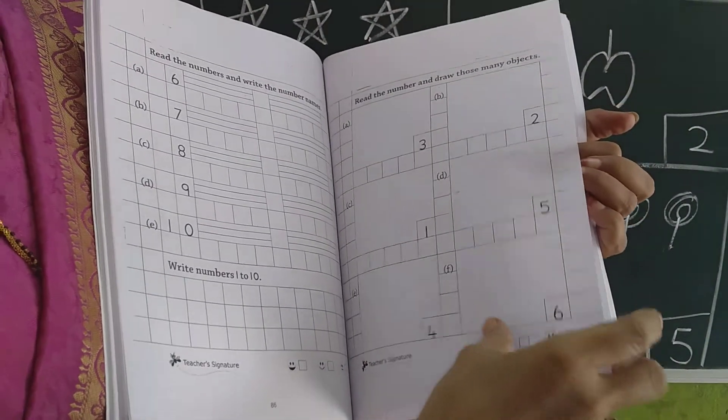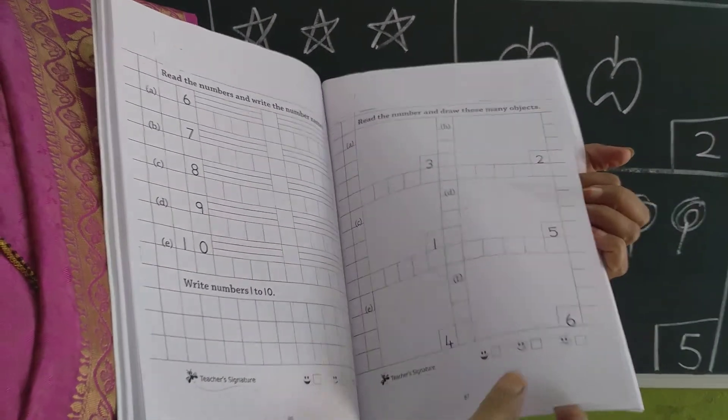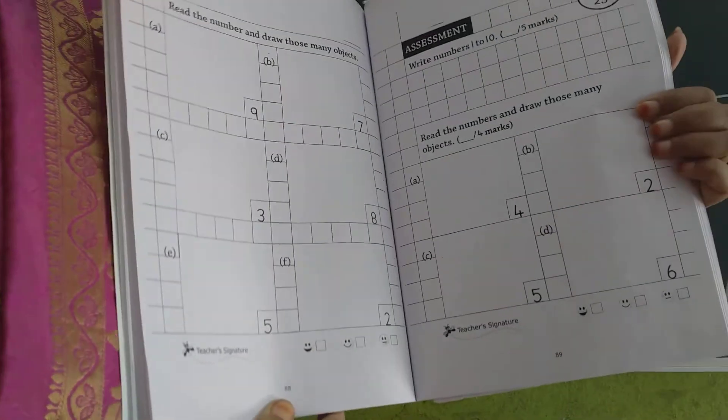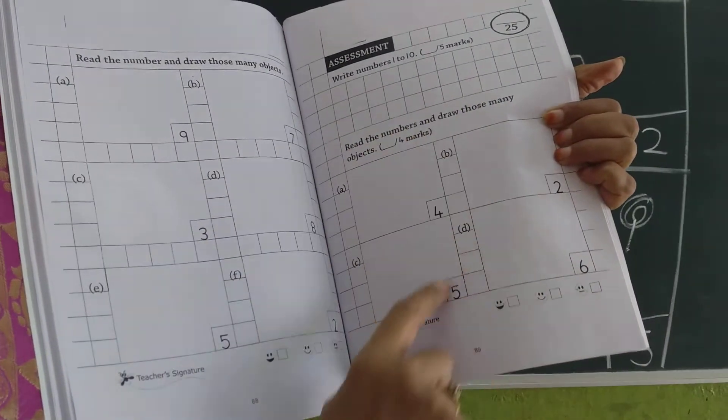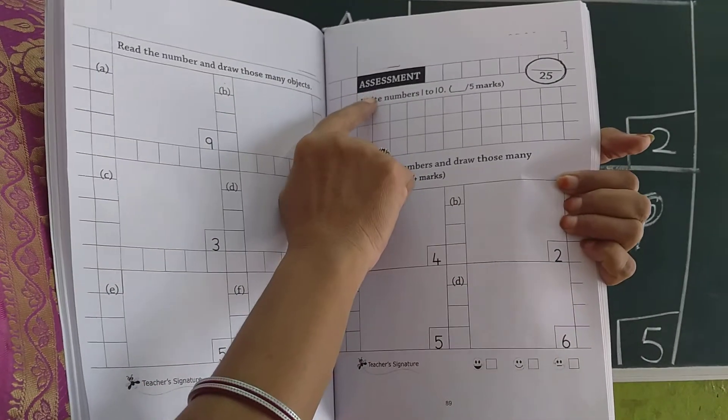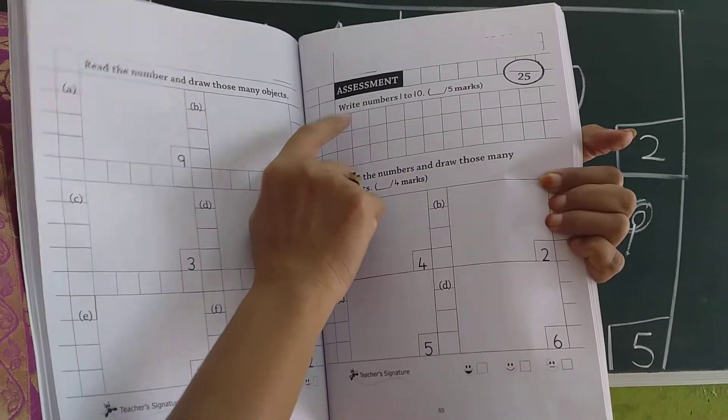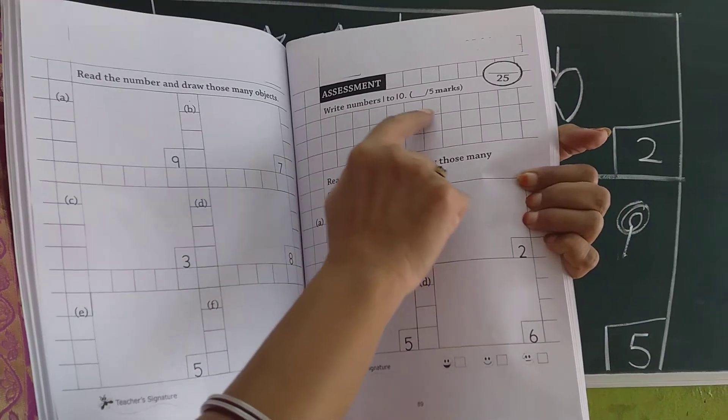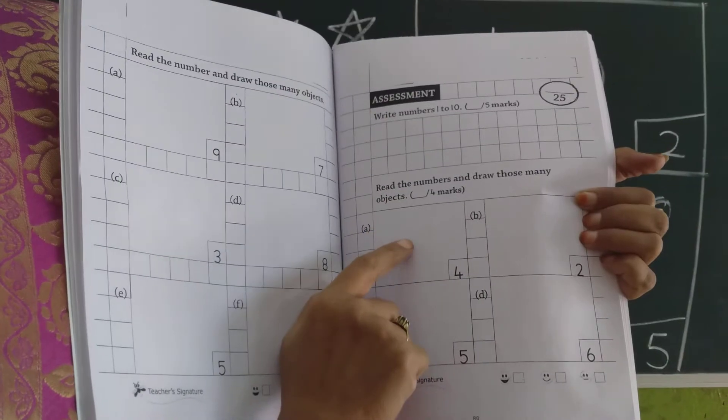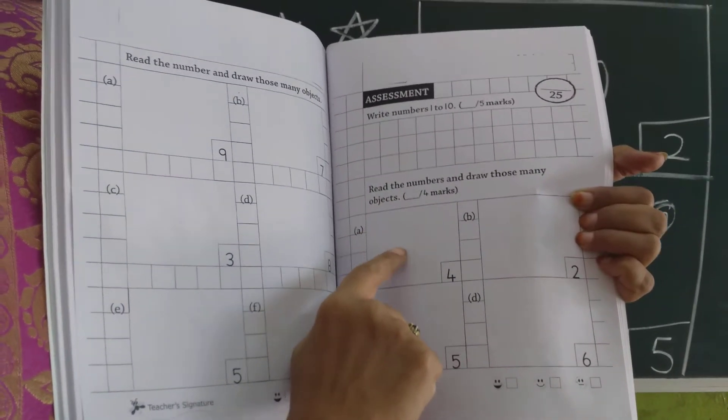Now you have to complete page number 87, 88. Okay, children. And this is also you have to do at home. Write numbers 1 to 10. Here you have to write the numbers 1 to 10 in boxes.